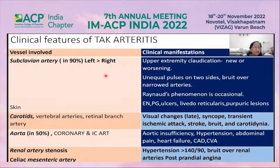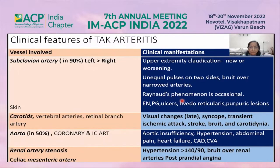Other features of Takayasu arteritis include subclavian artery involvement, seen in 90% of patients — the left is affected more than the right — causing upper extremity claudication, unequal pulses, and bruits. Raynaud's phenomenon is occasional, as is gangrene, because good collateral circulation develops. Skin involvement includes erythema nodosum, pyoderma gangrenosum, and ulcers. Carotid, vertebral, retinal branch arteries, and aorta are involved in 50% of patients.